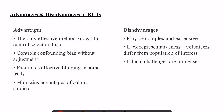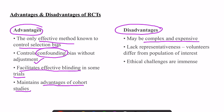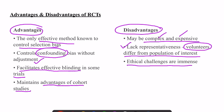Regarding advantages and disadvantages of RCTs: a randomized control trial is a type of intervention study where study and control groups are randomly assigned. Advantages include that they are an effective method to control selection bias and confounding, and they facilitate effective blinding. Disadvantages are that the RCT study design is complex and expensive, it lacks representativeness due to volunteer bias, and ethical challenges are immense.